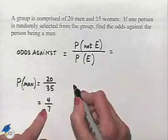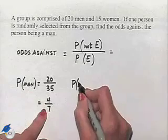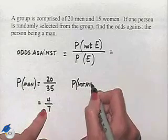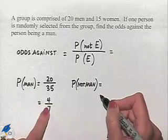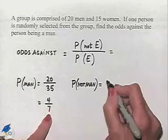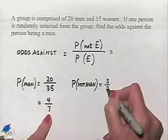So if the probability of being a man is 4/7, the probability of not being a man is going to be 1 minus 4/7, or the complement of that event, so that's going to be 3/7.